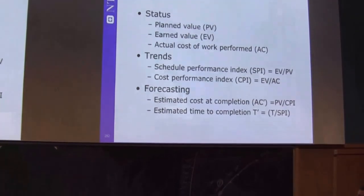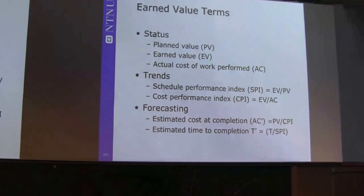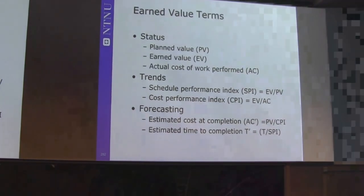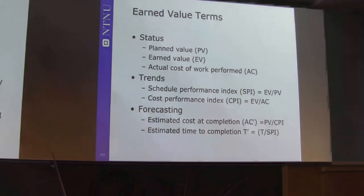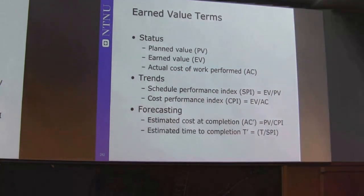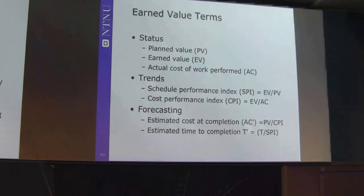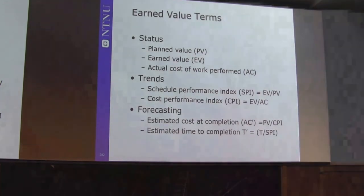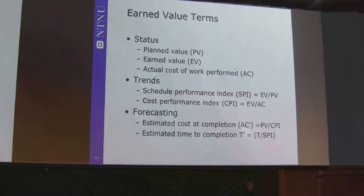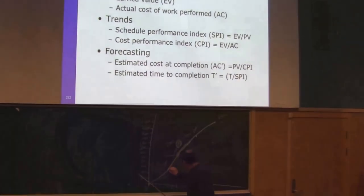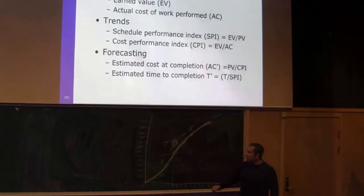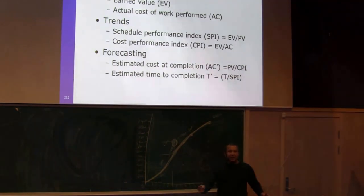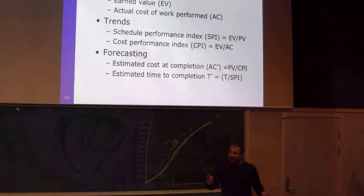In order to understand this, there are some important terms and abbreviations you need to learn. The first term is PV — Planned Value. This is the amount we look at on the S-curve, which is our accumulated costs or accumulated man-hours. This is our planned accumulated curve.